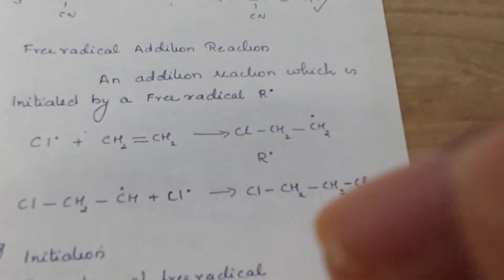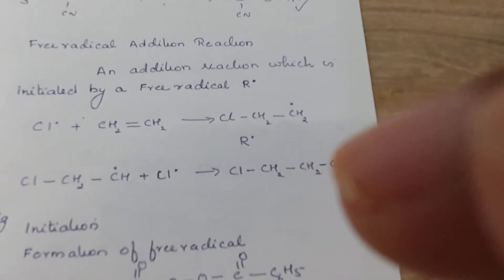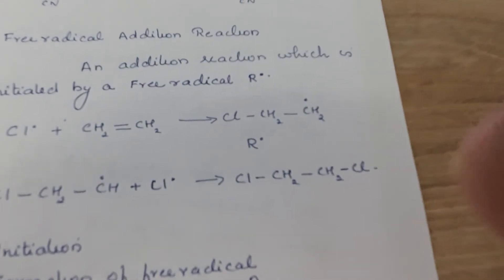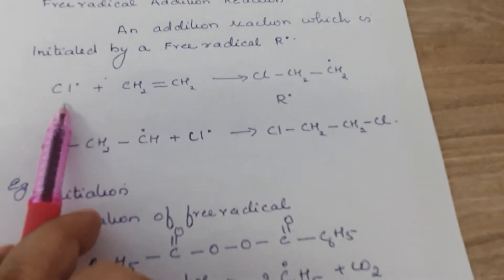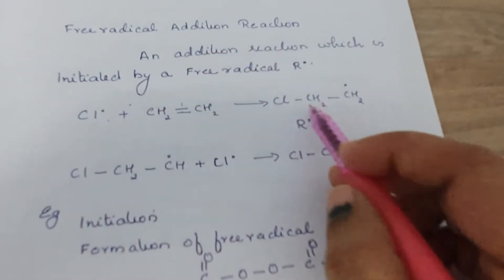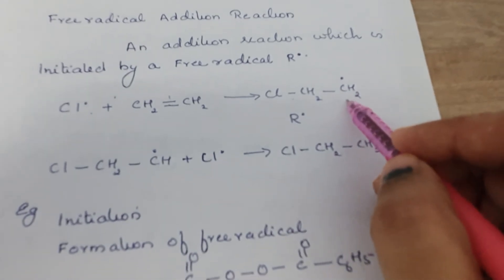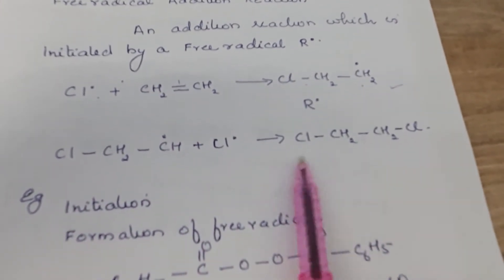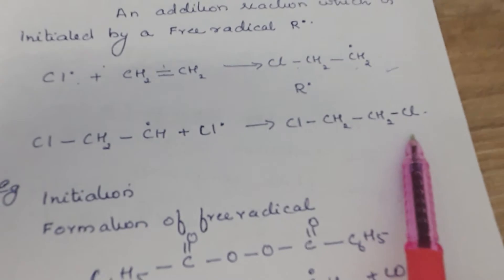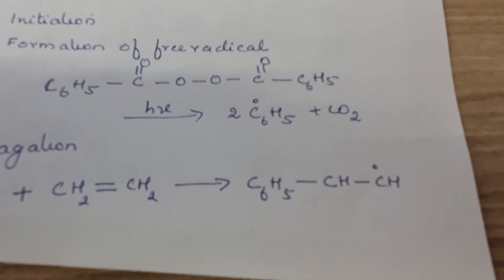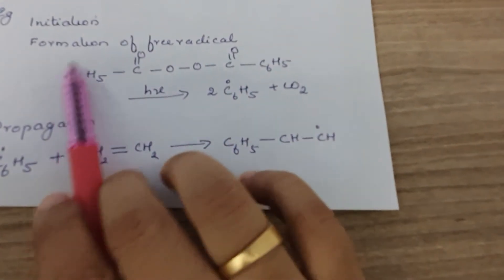Next is free radical addition reaction. The attacking agent is a free radical — a species with a single unpaired electron. The free radical attacks the double bond and breaks it homolytically, accepting one electron, causing the carbon to attain a free radical character. The free radical then reacts further to form a stable molecule. Free radical reactions proceed in three steps: initiation, propagation, and termination.